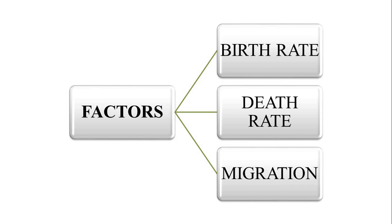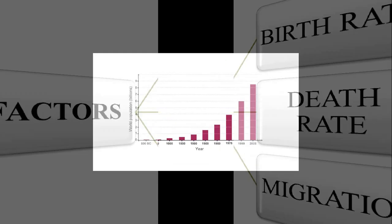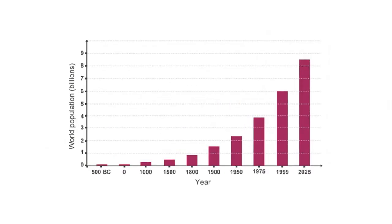The world population has undergone significant changes throughout history. This change is mainly due to the changes in birth rate and death rate. Till 1800, the world population grew slowly and steadily. The birth rate and death rate were almost the same due to the prevalence of deadly diseases, hunger and starvation, and unfavorable climatic conditions. Food production was not enough to meet the requirements of the population, hence the growth of population was very slow.